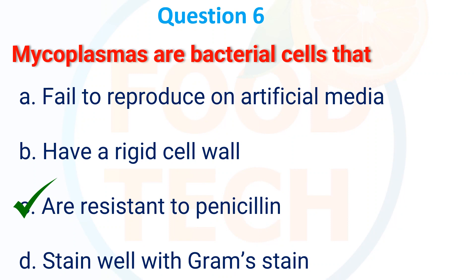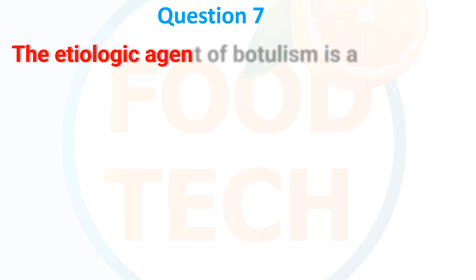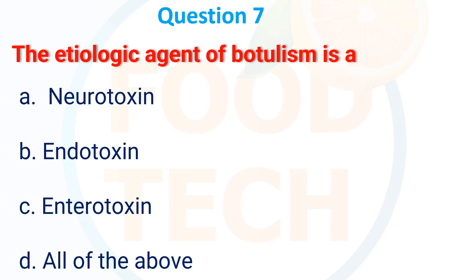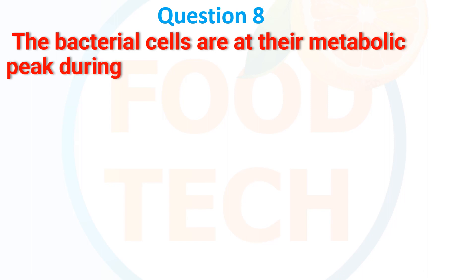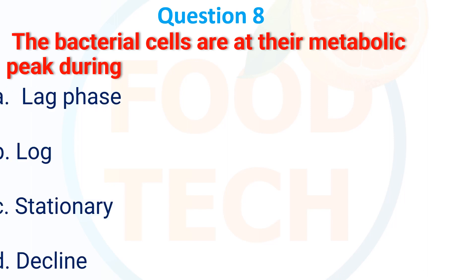The etiologic agent of botulism is: A. Neurotoxin, B. Endotoxin, C. Enterotoxin, D. All of the above. The answer is A: Neurotoxin.